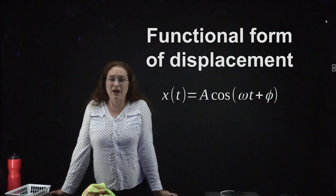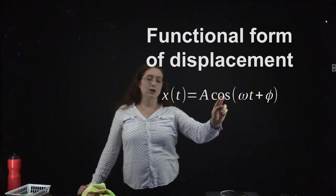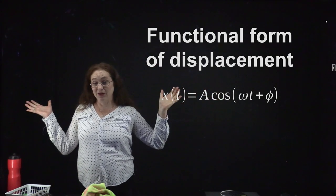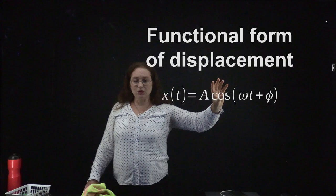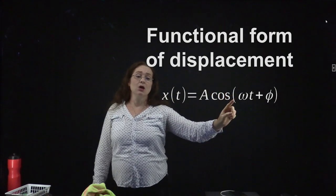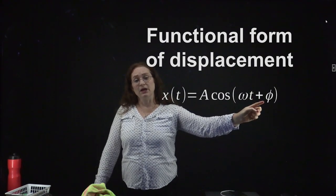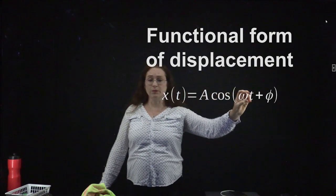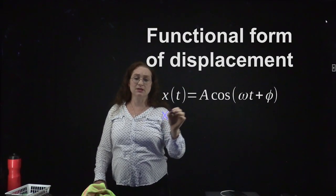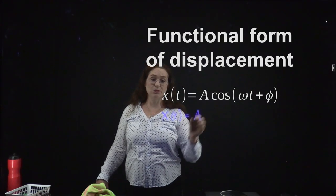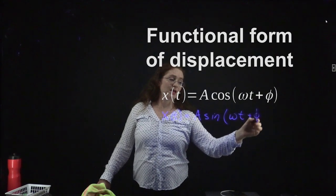We can talk about the form of that displacement. We're going to use the form x(t) = A cosine(ωt + φ), where A is some constant meaning the displacement amplitude. We have a choice between sine and cosine — they both work — but the convention in the textbook uses cosine. Omega gives you the angular frequency, t is the time, and φ is the phase shift. You can also describe any displacement as A sine(ωt) with a different phase shift.